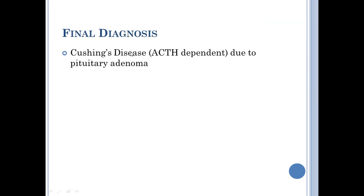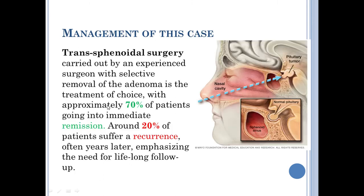Final diagnosis: Cushing's disease — ACTH-dependent due to pituitary adenoma. The management in this case is transsphenoidal surgery, which gives remission in about 70% of patients. About 20% suffer recurrence and require lifelong follow-up.